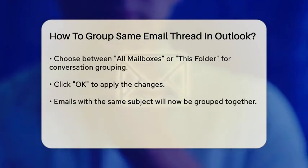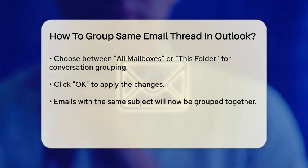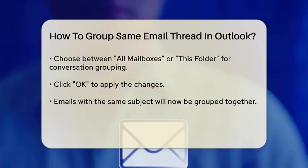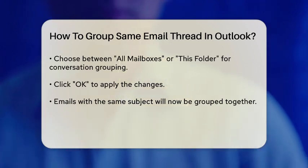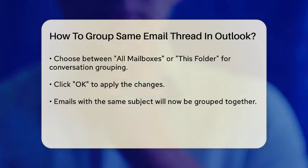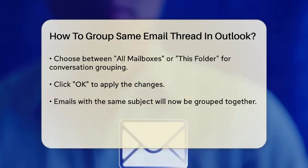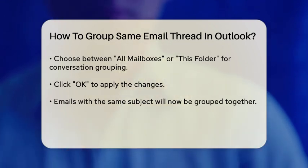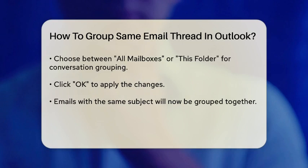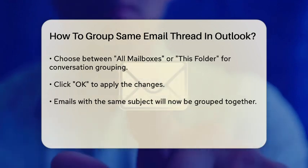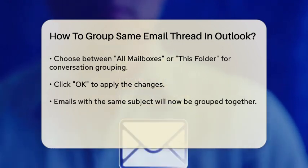Once you've enabled Conversation View, all emails with the same subject line will be grouped together. You can expand or collapse each conversation by clicking on the arrow next to the subject line. This way, you can see all the emails related to a particular topic in one place.